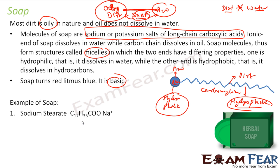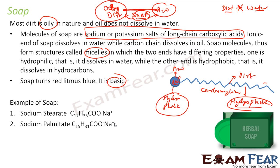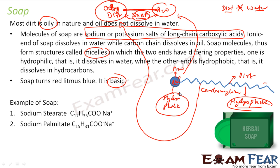Also, soap is a basic substance — it turns red litmus blue. Examples of soaps: CH3(CH2)16COONa — sodium stearate — where the sodium ion carries the positive charge. Another example is sodium palmitate: C15H31COONa. So the main concept of soap is there is oil that doesn't dissolve in water, and we use soap as a medium. Soap has two parts: one part dissolves in water, and the other long-chain part dissolves in dirt. That is the whole principle behind soap — it is the medium between oily dirt and water, being sodium or potassium salts of long chain carboxylic acid.